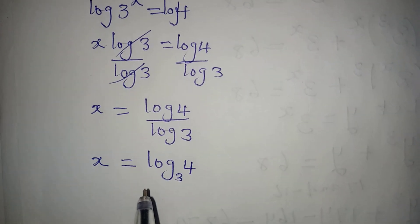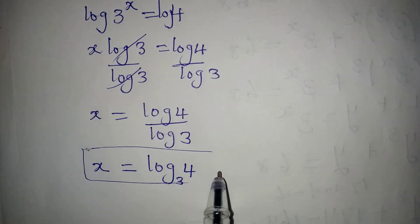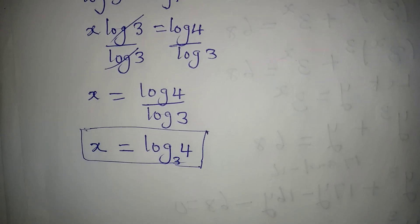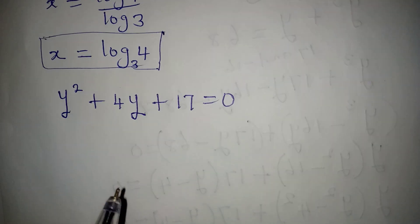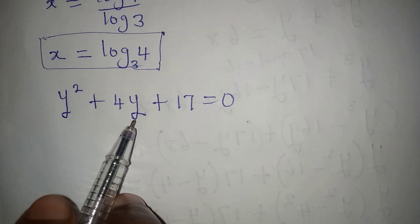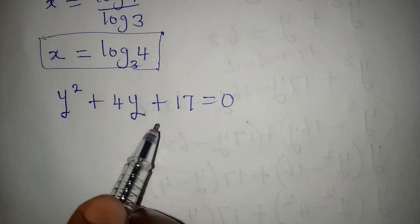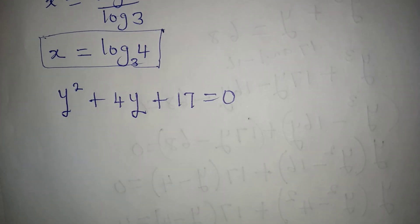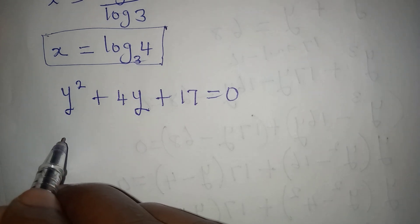So x equals log 4 to the base of 3. But remember, I said we want to solve this completely if possible. I will now pick out the quadratic equation — the second factor — from before. This is the quadratic equation y squared plus 4y plus 17 equals 0. To solve this, it will give us a complex solution because of the discriminant.